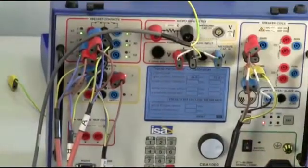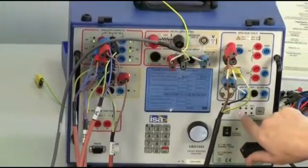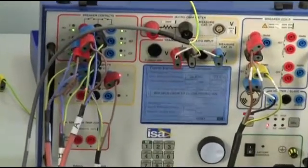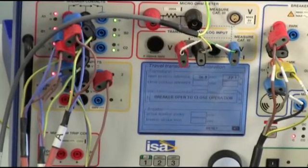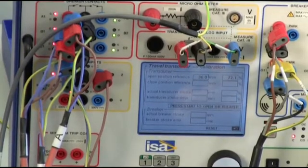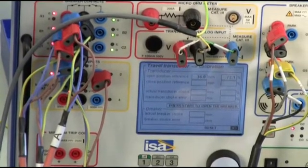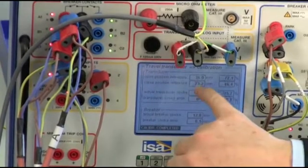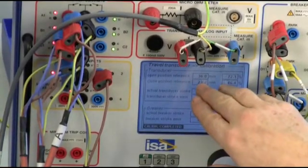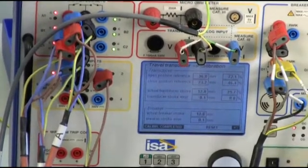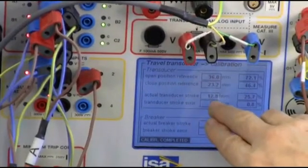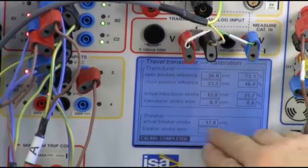The circuit breaker is open and now I have ready the close command. As before, I have here the measurement of the position in the close, the stroke in the close position of the circuit breaker, the actual transducer stroke, the error, and so on.